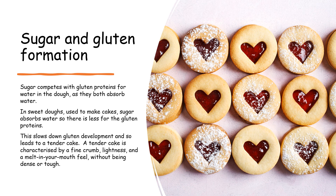Sugar competes with gluten proteins for water in the dough, as they both absorb water. In sweet doughs used to make cakes, sugar absorbs water so there is less available for the gluten proteins. This slows down gluten development and leads to a tender cake, characterised by a fine crumb, lightness, and a melt-in-your-mouth feel without being dense or tough.